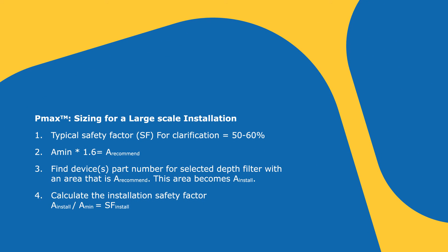So then what do you do with a min? Now you need to size for your large scale installation. We typically include a safety factor for clarification is between 50 to 60%. So what you would do is you would take the a min number, you would multiply that by 1.6 and we could call this a recommend. And then you would use, you could call customer service or a process development scientist, your account manager, a catalog or a website for Millipore, AMD Millipore. And you can find the device part number for the selected depth filter area with an area that would be greater than or equal to a recommend. And this area could become your a install.